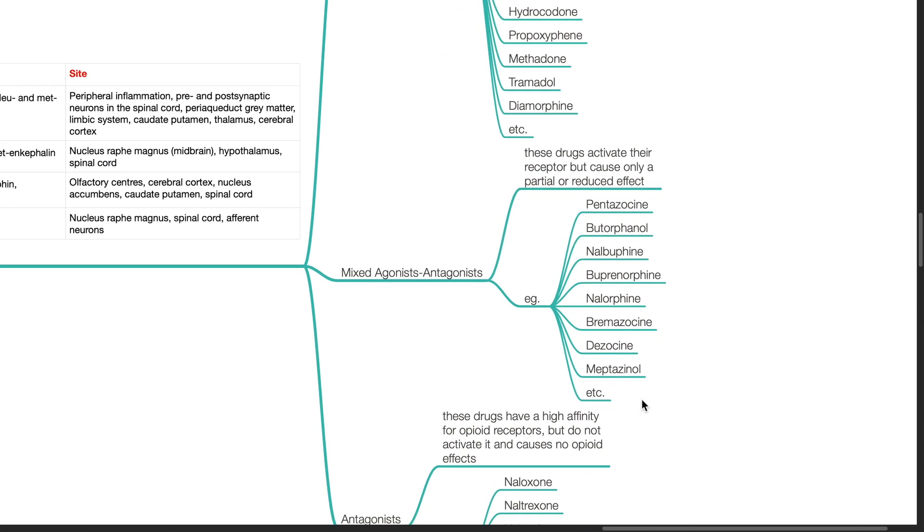Mixed agonist and antagonist, these drugs activate their receptors but cause only a partial or reduced effect. Examples include pentazocine, butorphanol, nalbuphine, buprenorphine, nalorphine, bremazocine, dezocine and meptazinol.